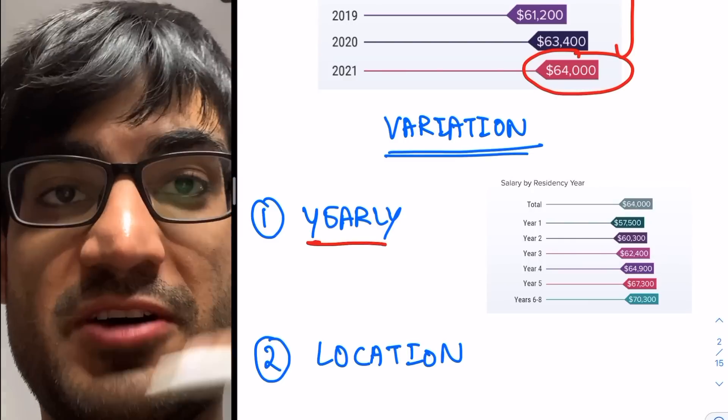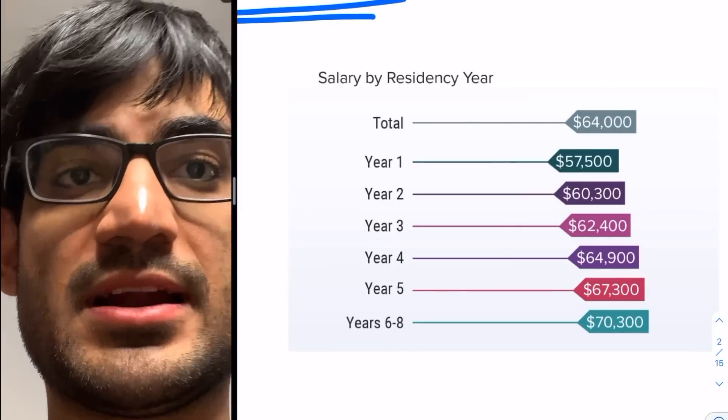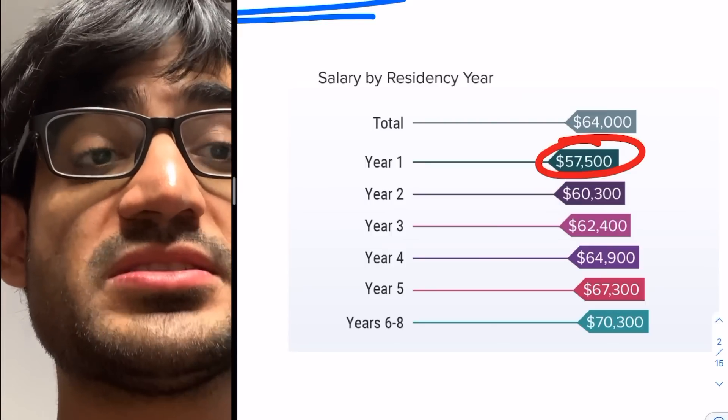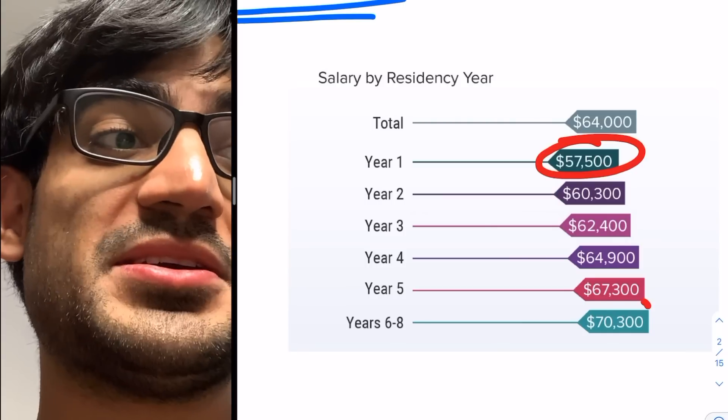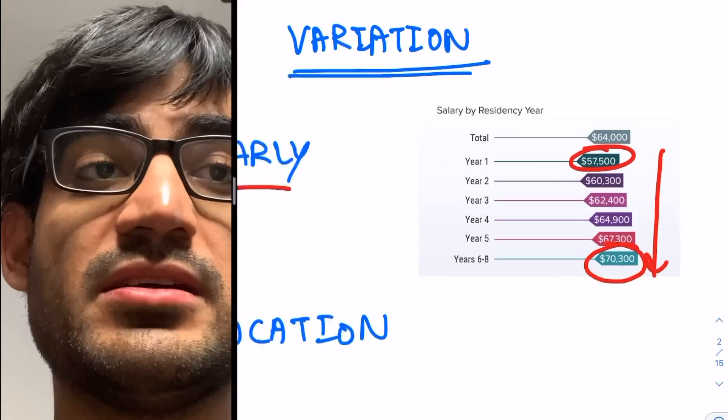Number two, you become far more competent, so you need to be paid more. That's why residency salary increases year by year. So in year one, you might be earning about $57,500, but then in year six to eight, you're going to be earning $70,300. So it increases yearly.